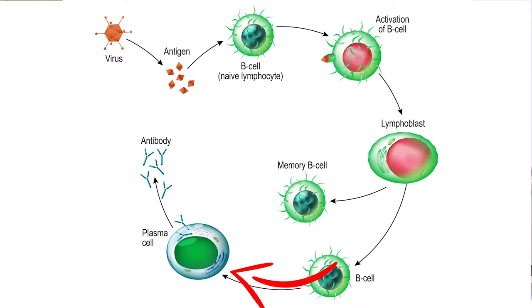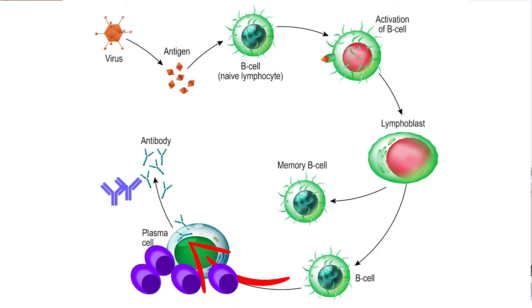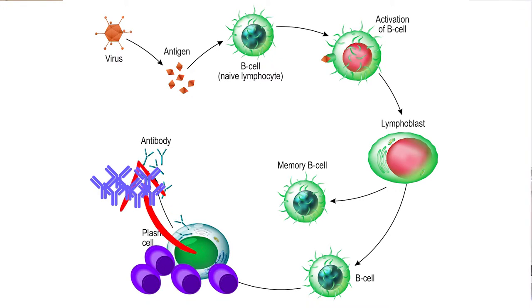What that means is you have a group, a small population, of plasma cells in your body that make a specific antibody that targets, let's say, the chicken pox or the measles, and helps protect you from subsequent infections because you have some amount of that antibody in your blood.